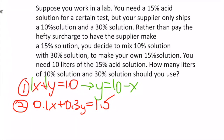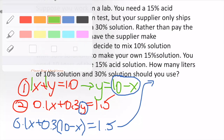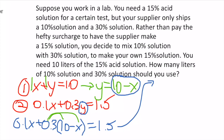I plug 10 - x in for y in the second equation: 0.1x + 0.3(10 - x) = 1.5. From here I distribute: 0.1x + 3 - 0.3x = 1.5.